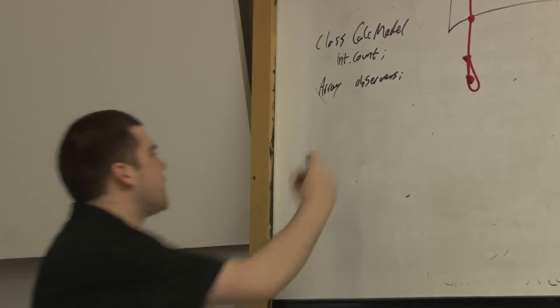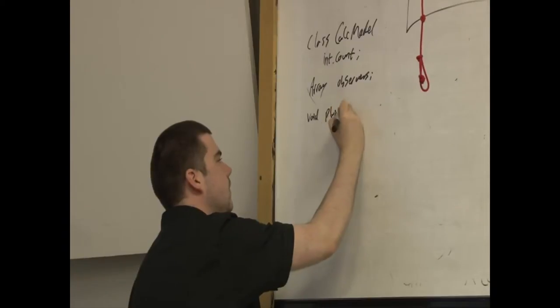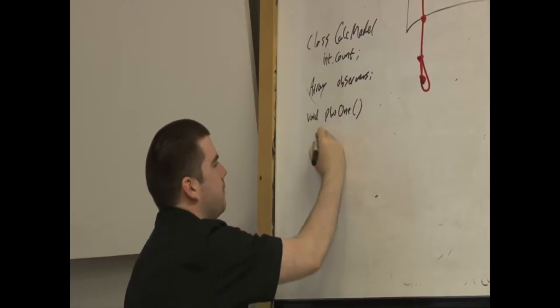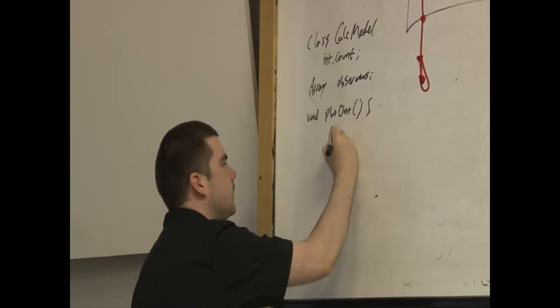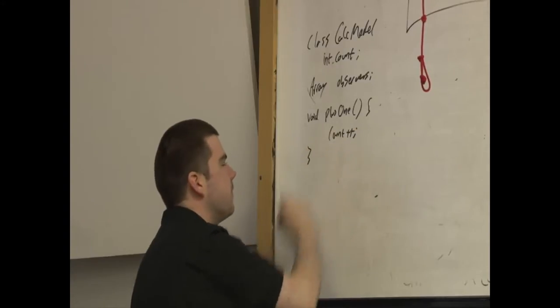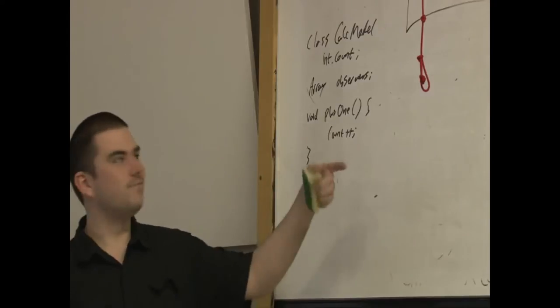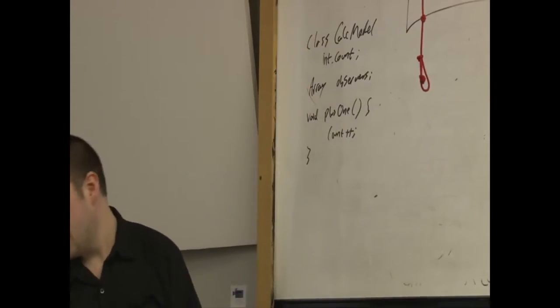I suppose then the next one to have is a method. And that's just a simple sort of thing of, you know, count++ or whatever your favorite way of incrementing a number is. And every time that method is called, that'll do what this program is supposed to do and it'll just keep updating the count one at a time.